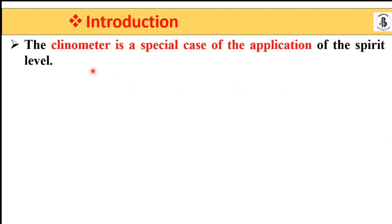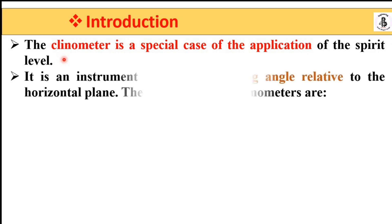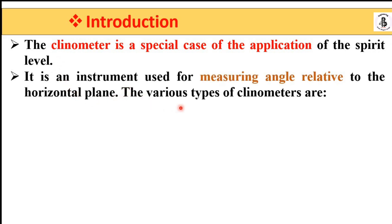Basically, the clinometer is used as a special case of the spirit level. A spirit level is used to measure the level with respect to a horizontal surface as a reference. In the case of the clinometer, it is used for measuring angles relative to the horizontal plane. The various types of clinometers are: vernier clinometer, micrometer clinometer, dial clinometer, and optical clinometer.